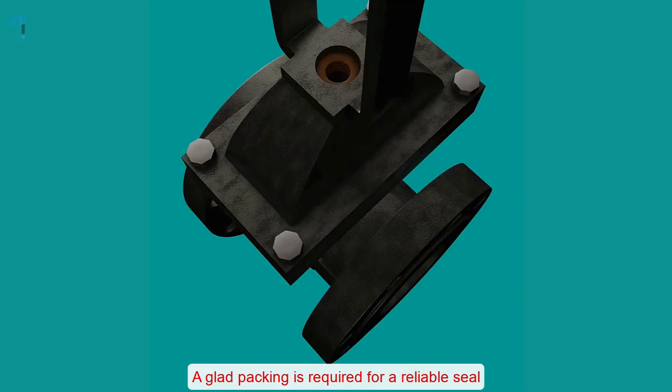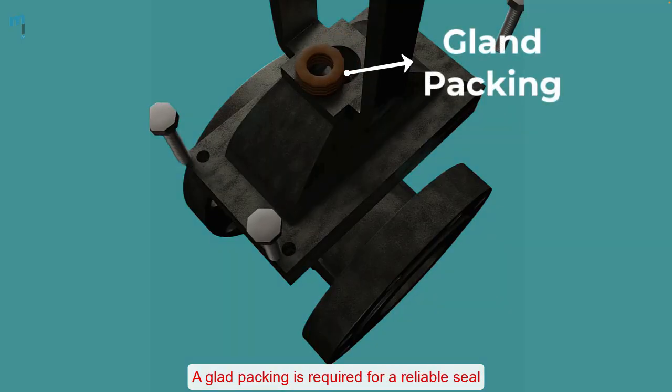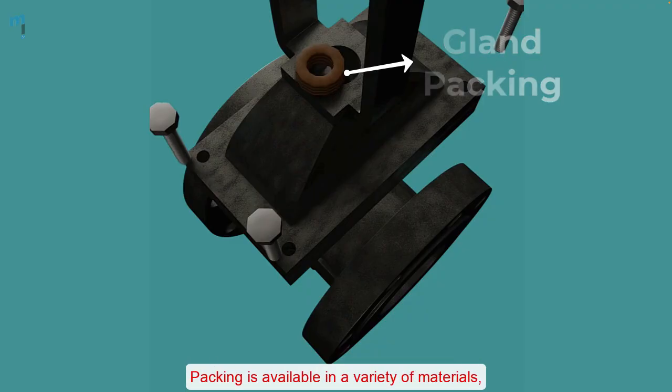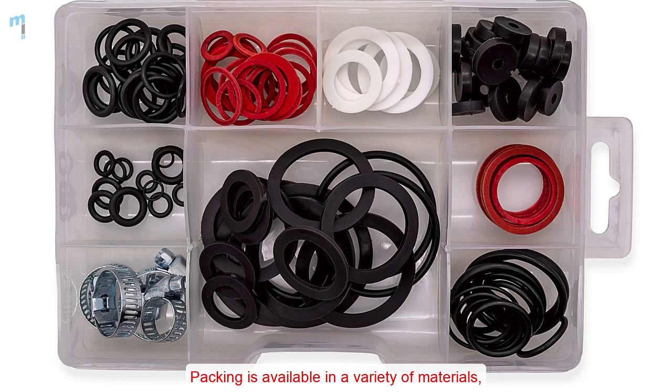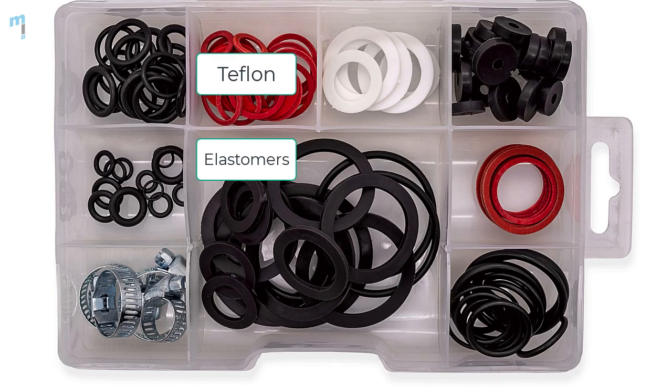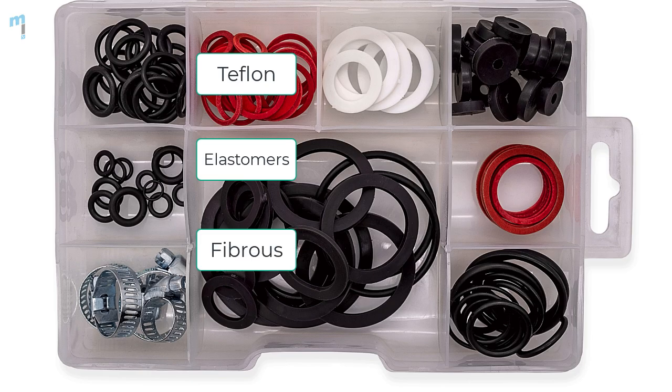Packing material: A gland packing is required for a reliable seal between the stem and the bonnet. Packing is available in a variety of materials including teflon, elastomeric material, fibrous material and others.